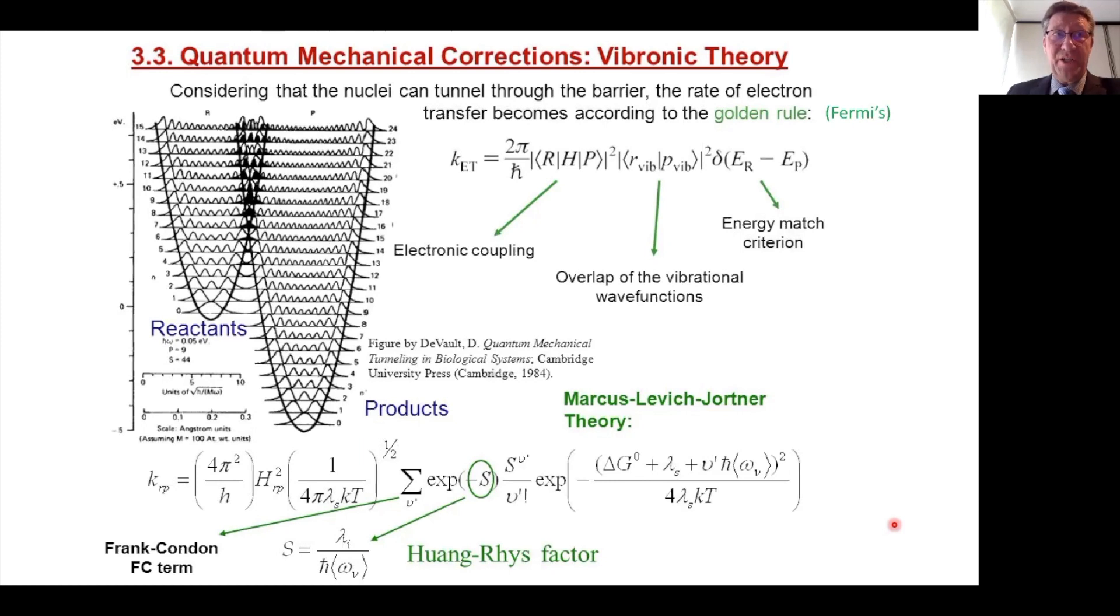Electronic transitions and vibrational transitions can influence each other, they can mix, and they can work together in what we call vibronic coupling. This concept is expressed in Fermi's golden rule. Fermi's golden rule tells us that the rate is the product of an electronic part, the overlap of electronic wave functions, and a vibrational part, the overlap of vibrational wave functions. This last part is more important in the Marcus inverted region.